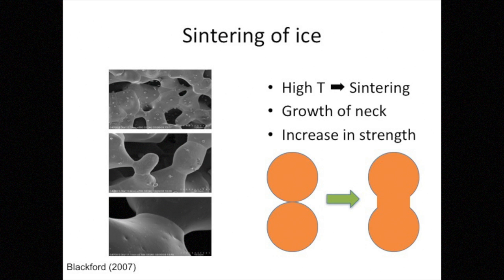So ice molecules migrate from this region to the neck. And as a result, the neck grows like this. So if this process proceeds, a grain cannot rotate freely.